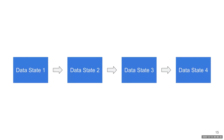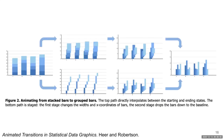In Hans Rosling's talk, the data states that he is transitioning between are years in which these vital and economic statistics were collected. So we started to imagine what a data animation would look like if instead of the animation showing transitions between variables in a data set, our animations could show transitions between data states as they are transformed in a data analysis pipeline. We know from prior work that people are good at following many different kinds of data transitions and that these animations can help them understand the underlying data in a visualization.